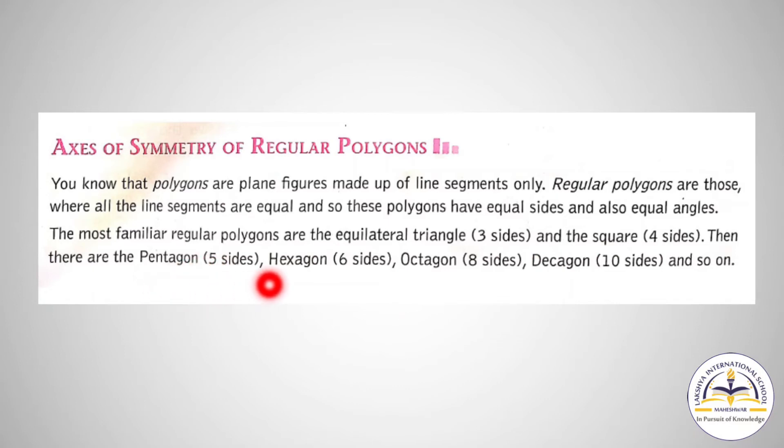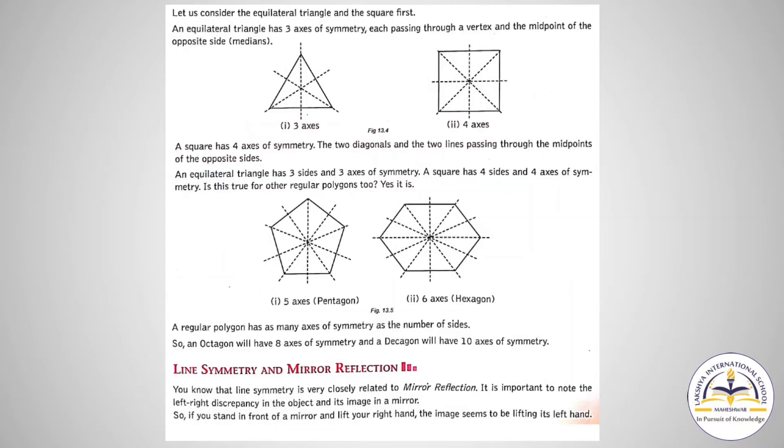Now, an equilateral triangle has three axes of symmetry, each passing through a vertex and the midpoint of the opposite side. For the square, there are a total of four axes—it has one, two, three, and four axes of symmetry.